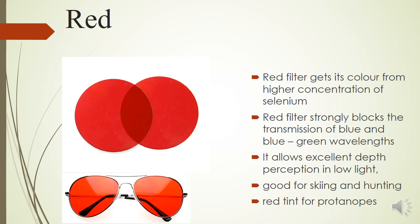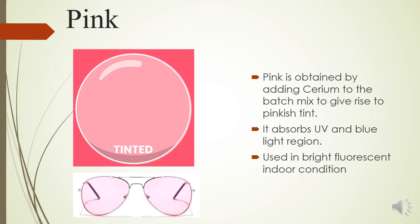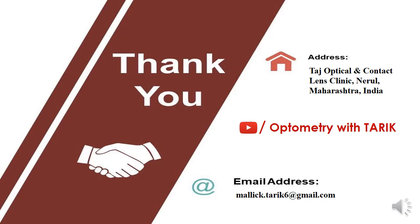The last tint is the pink tint, obtained by adding cerium to the batch mix. It is also called an unsaturated red tint — essentially a red tint applied at a lower saturation level. It absorbs UV and blue light, and is excellent for bright and fluorescent indoor conditions, reducing glare so the patient can have better vision with enhanced performance.